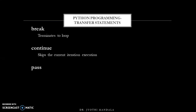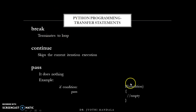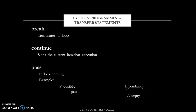The third type of transfer statement is pass. Pass does nothing. If you don't have anything to write in a block, you simply write pass. For example, if the condition is true but you don't want to write anything in that block, you just write pass. It is similar to an empty block in C. These are all the different types of control statements in Python.